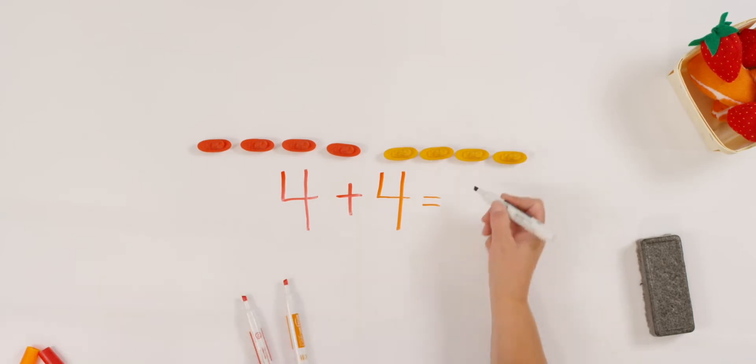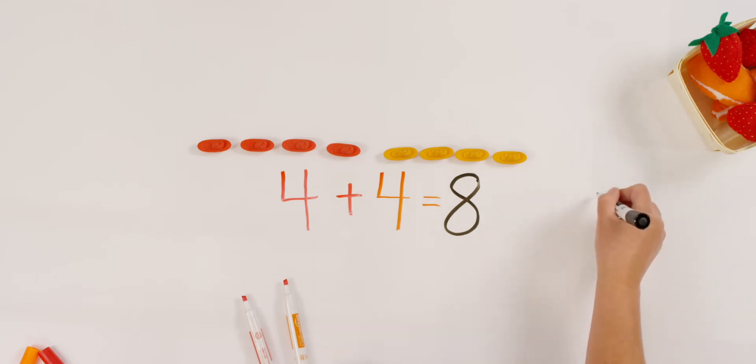Let's write the answer. Four plus four equals eight. Let's show that in a number bond. Just like we did before. There's my whole, part, part.